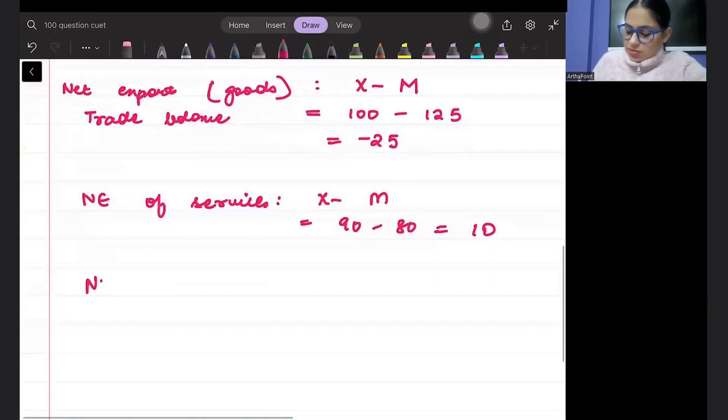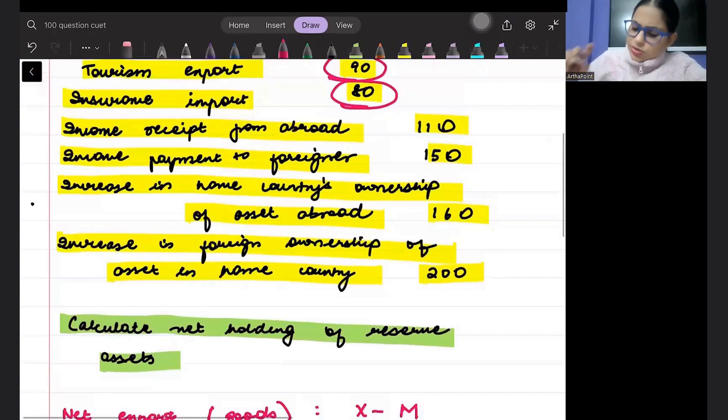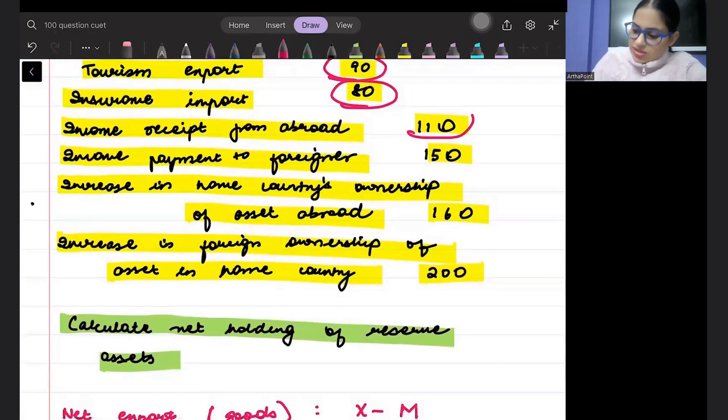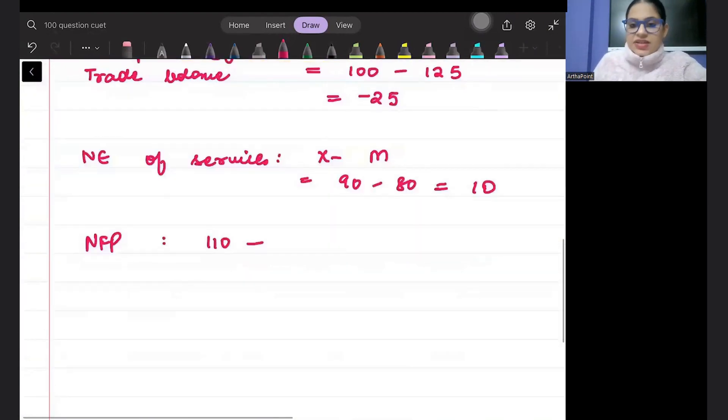Peter, net factor payment dekhte hai. Net factor payments. So, income receipt, money that is coming in is 110. Money that is going out is 150. So Peter, this is going to be 110 minus 150. That means minus 40.